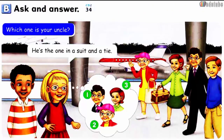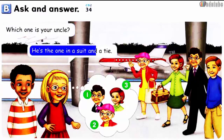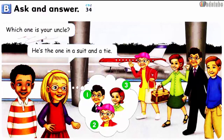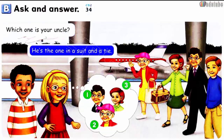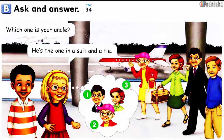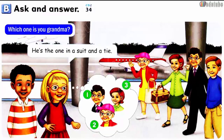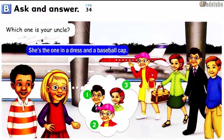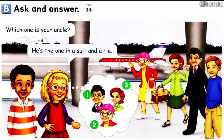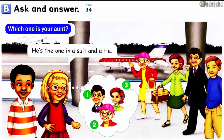Which one is your uncle? He's the one in a suit and a tie. Number 1: Which one is your uncle? He's the one in a suit and a tie. Number 2: Which one is your grandma? She's the one in a dress and a baseball cap. Number 3: Which one is your aunt? She's the one in a skirt and a blouse.